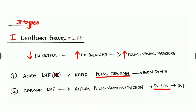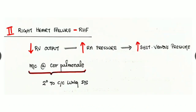In chronic left ventricular failure, there is adequate time for the body to adapt compensatory mechanisms to avoid pulmonary edema. There occurs a reflex pulmonary vasoconstriction, which increases pulmonary hypertension, but later this may lead to right ventricular failure. In right heart failure, there is reduced right ventricular output, which increases right atrial pressure.